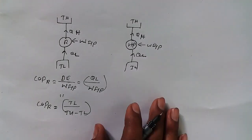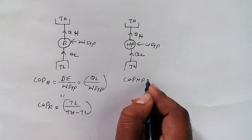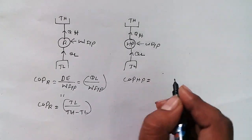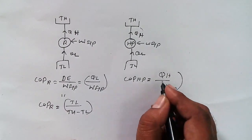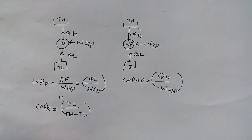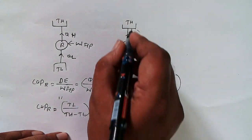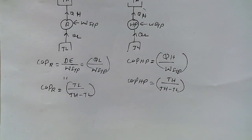Now in the case of a heat pump, COP of heat pump is equal to the desired effect upon work input. What is the desired effect for the heat pump? That is higher temperature heat, so QH upon work input. In terms of temperature, COP of heat pump is equal to TH divided by TH minus TL. So these are the two COPs.